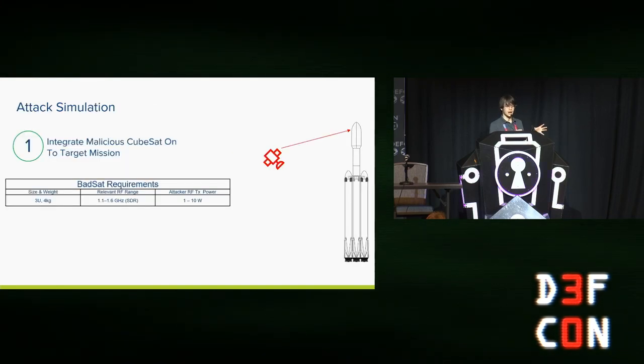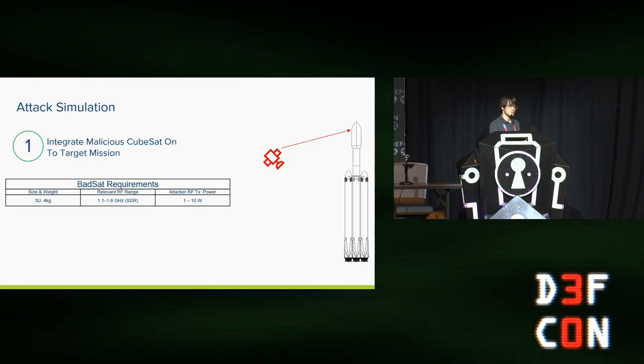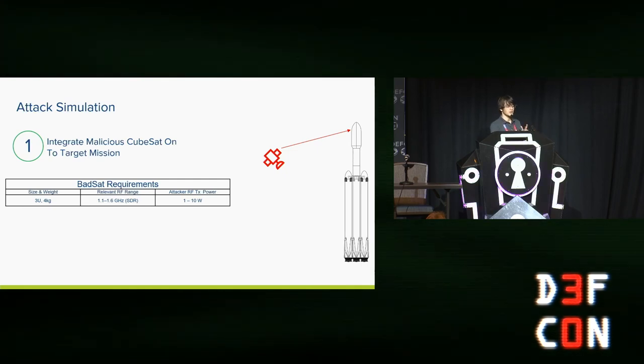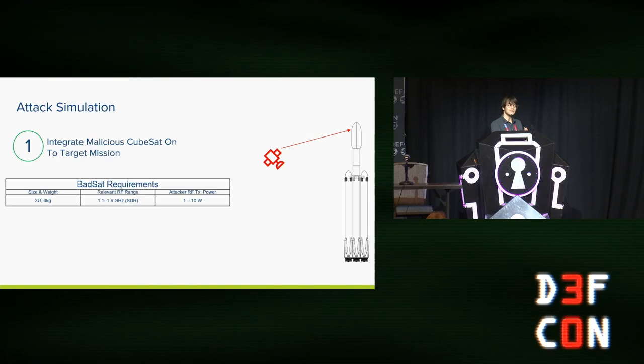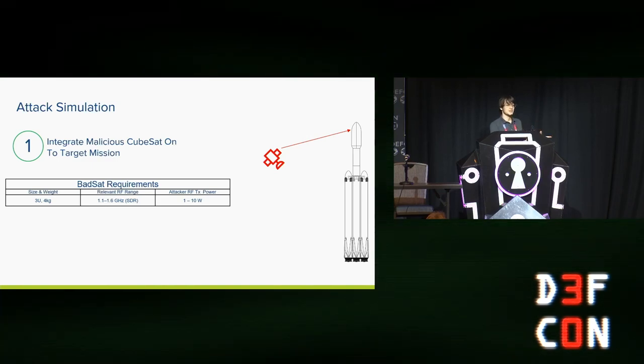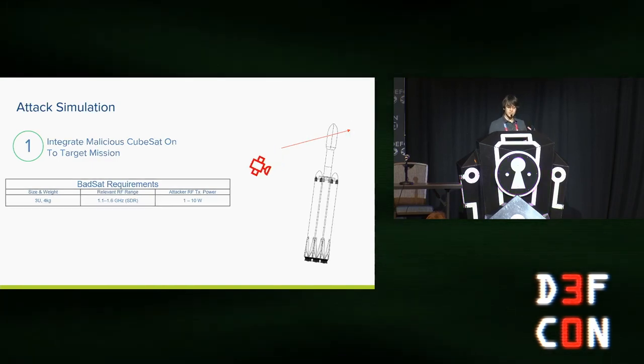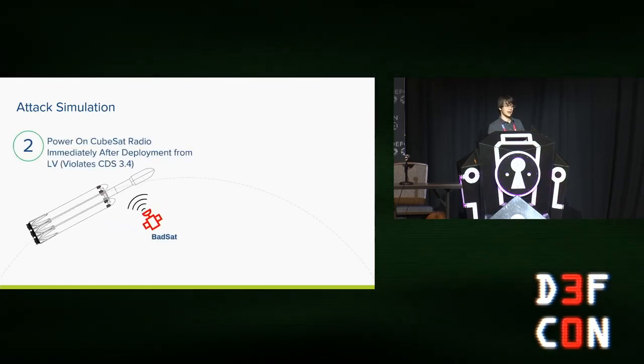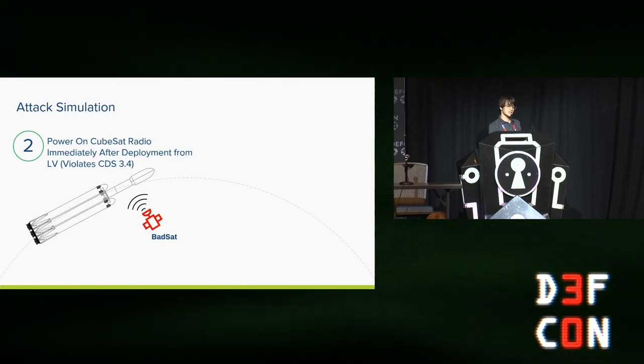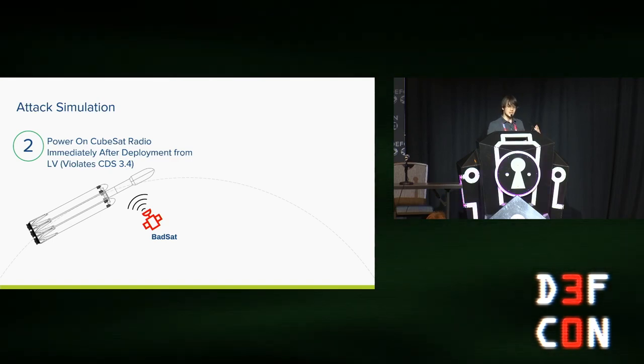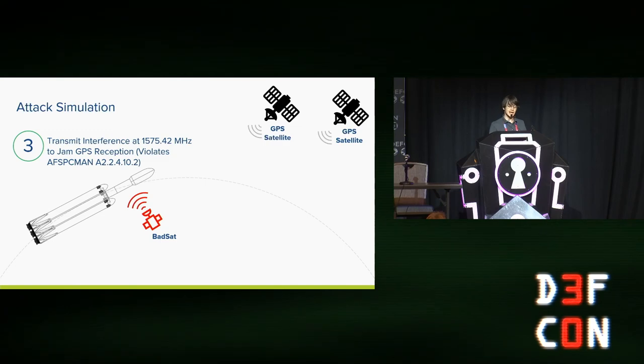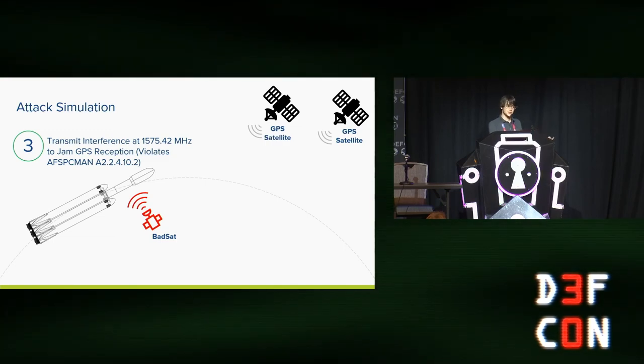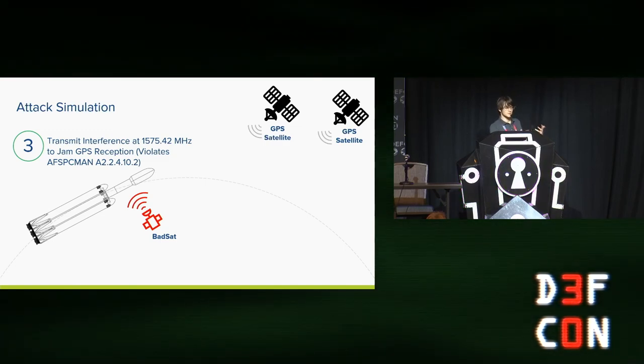During the launch period, our CubeSat is going to behave just like it's supposed to. It's going to be turned off. It's going to look like a fairly regular CubeSat. It's not going to do anything while we're attached to the rocket. But the moment we separate from the launch vehicle, so when we're in orbit, we're going to start misbehaving. We're going to start to transmit radio signals 45 minutes before we're supposed to. And these radio signals are going to be designed to overlap with GPS signals. So they're going to target the specific frequency that comes from GPS satellites.